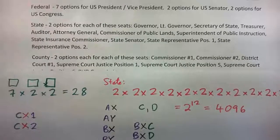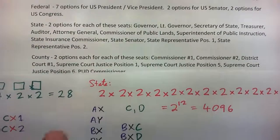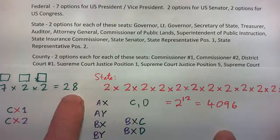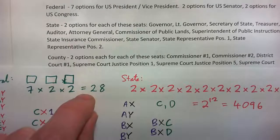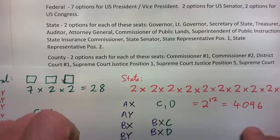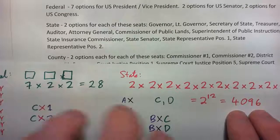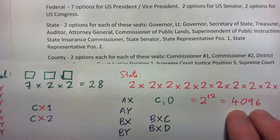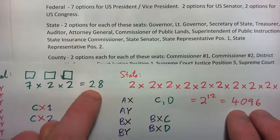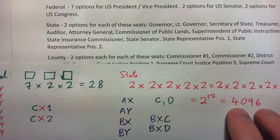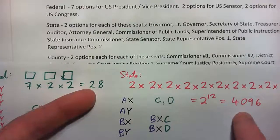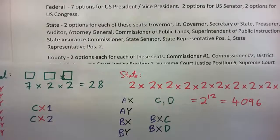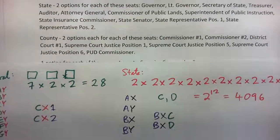Now combining state with federal: take any one of the 28 ways of voting for the federal options, and for each of those there are 4,096 ways to vote for the state options. So 28 × 4,096 gives you the combined number of ways to vote for federal and state options.